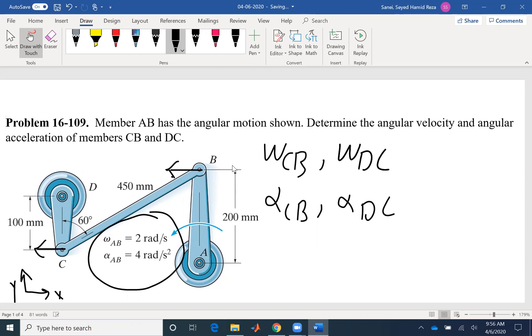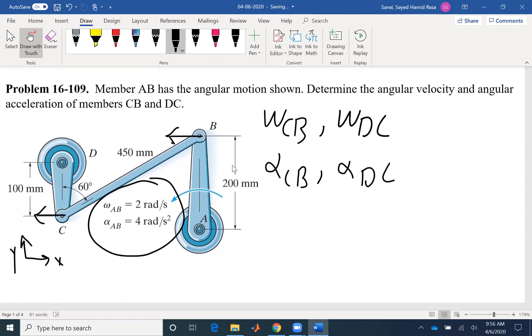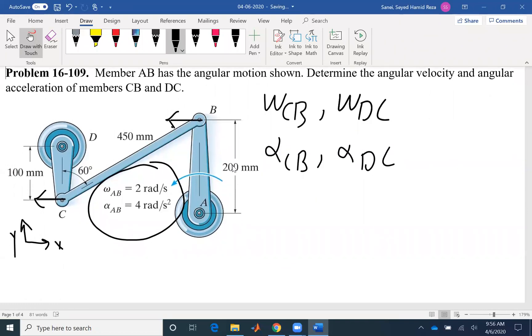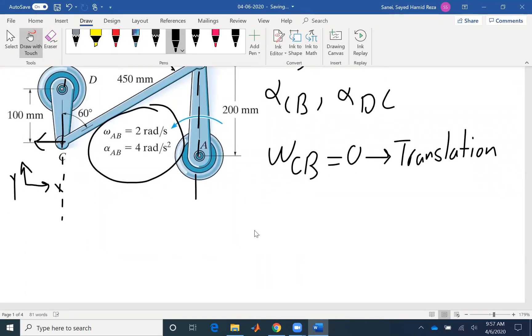Also, velocity at C is perpendicular to link CD. If I want to find the instantaneous center of zero velocity, I have to draw vertical lines to both velocities. You can see it will meet at infinity. That means that omega CB is zero because the link is having a translation motion, there is no rotational component. Translation means that any point on the rigid body has the same velocity.